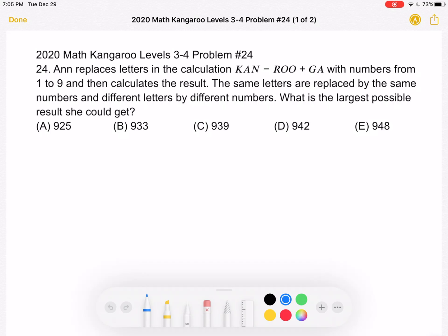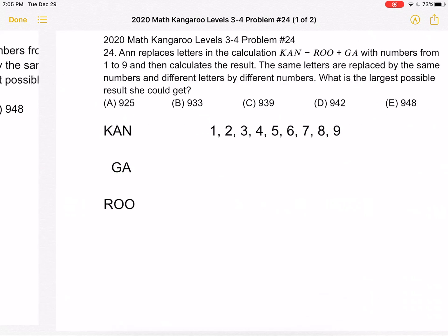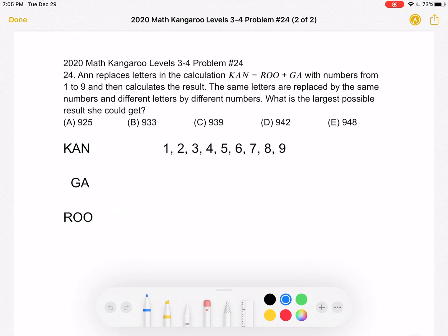This is the problem as it originally appeared on the test, and here is where we'll be doing the solution. To start, we have this sum KAN plus GA, and then we're subtracting this number, ROO, from that sum.